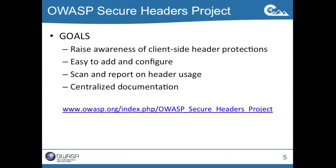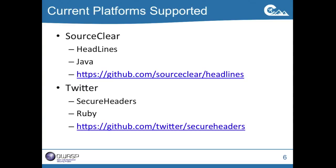The OWASP Secure Headers Project is all about raising awareness of client-side protections. Has anybody used the CSP Content Security Policy? XFrame Options? HSTS header? Not a whole lot — because most people don't know it exists. The whole goal is to let people know these exist, show what they do, and make them easy to add and configure. Our module takes just three pieces in the web.config and it's ready to go. There are two other implementations right now: SourceClear has one called Headlines, a Java implementation, and Twitter put one out for Ruby.